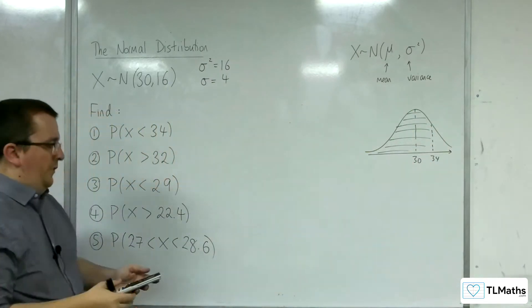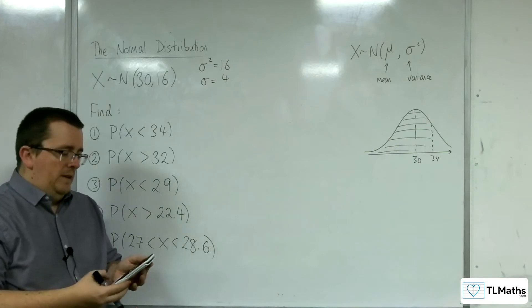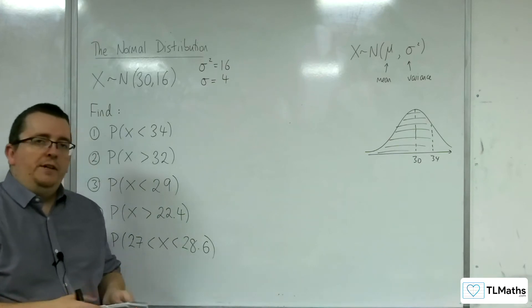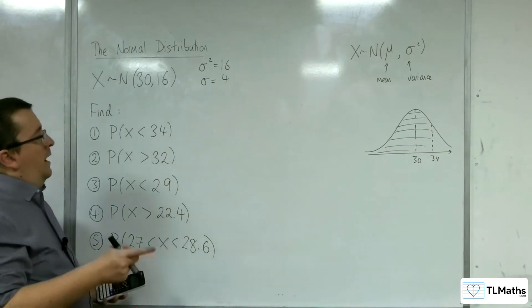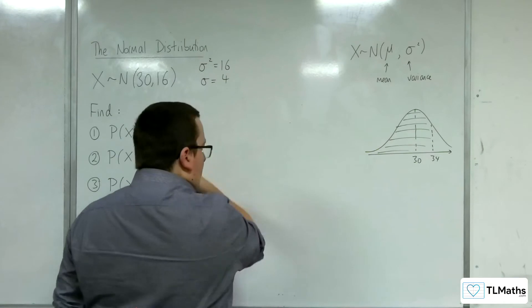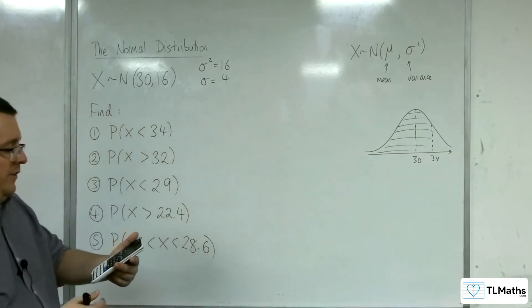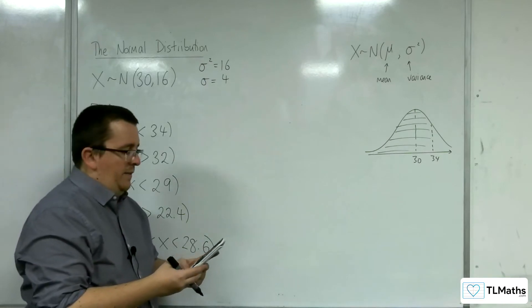Okay, so we're going to go straight to the calculator menu and then number 7, and normal CD is what we want. Now the lower value, we need a nice low value that's all the way down here. So minus 100 would be fine, minus 1000. I'm going to use minus 1000 this time, so negative 1000. The upper value is I'm going up to 34.